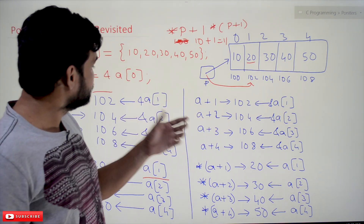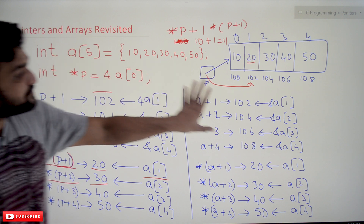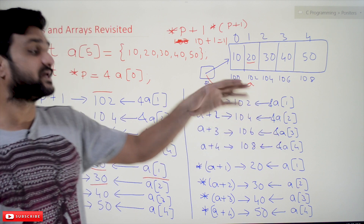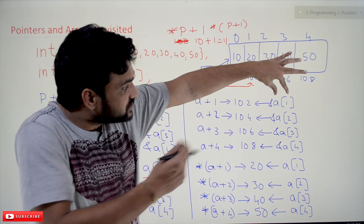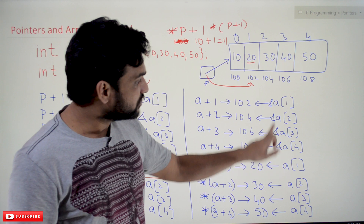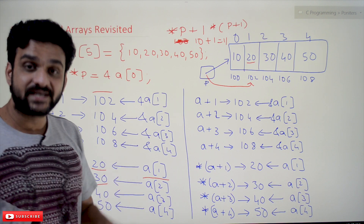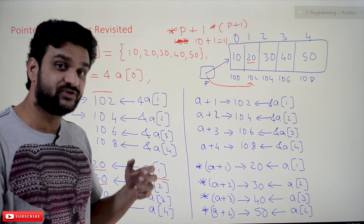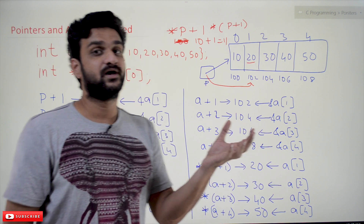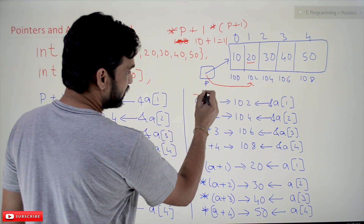Now, the same pointer arithmetic can also be applied to array names. So far we have used a[1], a[2], a[3] to get values, and ampersand a[1], a[2] to get addresses. But the same pointer arithmetic concepts are applicable to array variable names as well — we can add or subtract an integer from the array name.